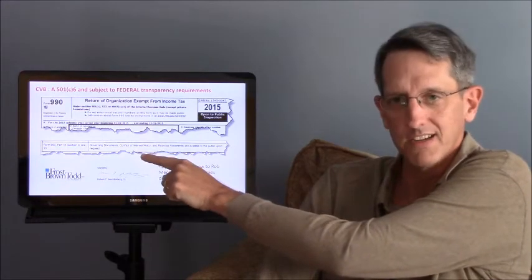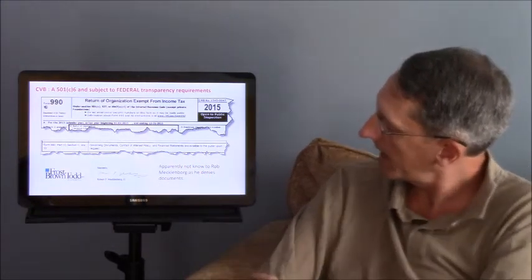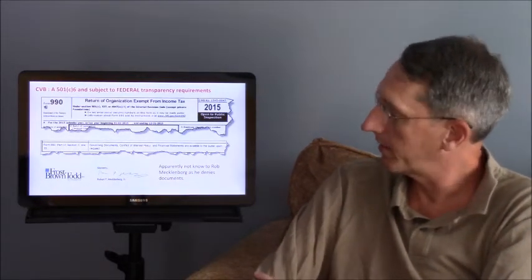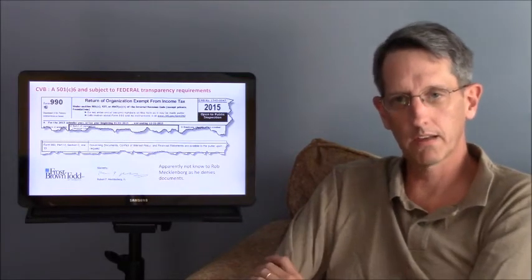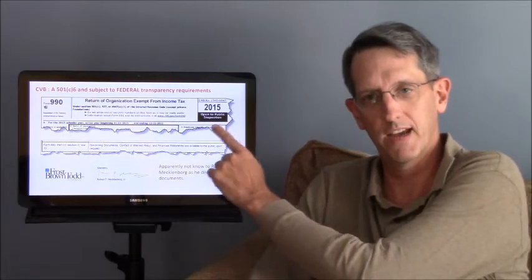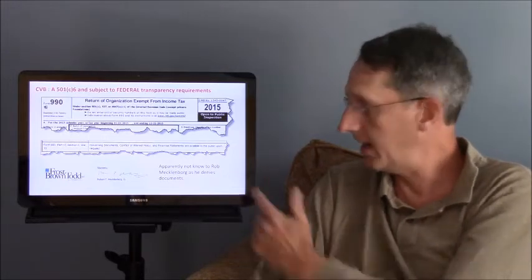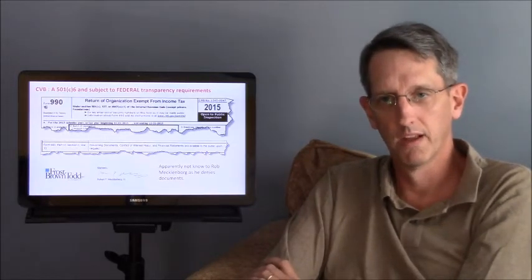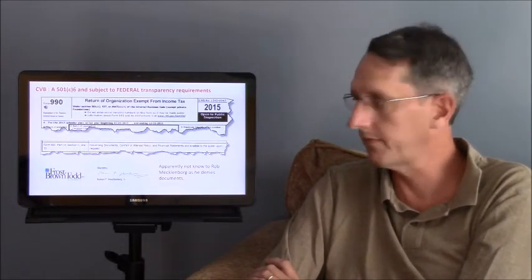And within that document, they actually state what other documents they make available to the public. And they said they make governing documents, conflict of interest policy, and financial statements available to the public upon request. So I have to point out to Rob Mecklenburg, I'm a little confused. You're denying my records request when your federal tax return says that you provide these records to the public. To me, I'd be highly embarrassed if I was in a prestigious law firm and missed what the requirements of my client were as a non-profit.